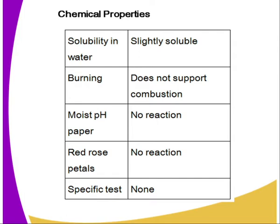What are the chemical properties of nitrogen gas? Starting with its solubility — it is slightly soluble in water. When it comes to combustion, nitrogen does not support burning due to its inert nature. It has no reaction with litmus paper and no reaction with red rose petals. This indicates the gas is neutral — neither acidic nor basic. Nitrogen has no specific test and is identified from its negative observations across all tests.